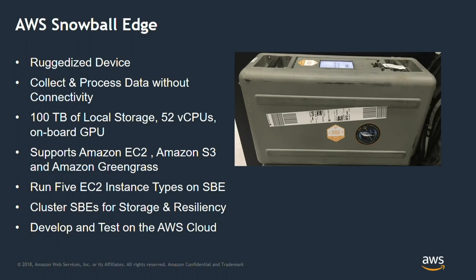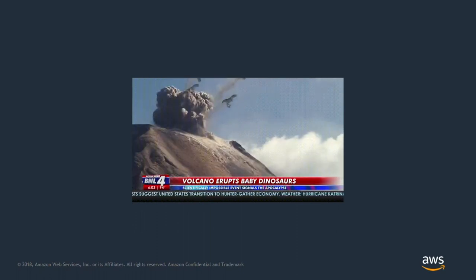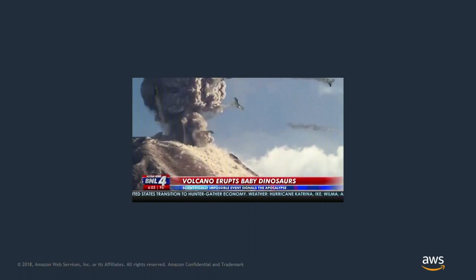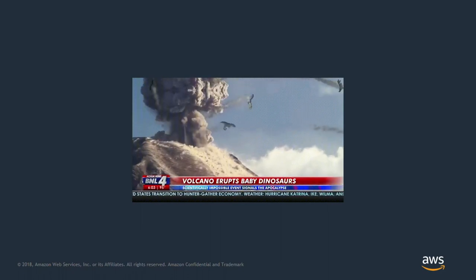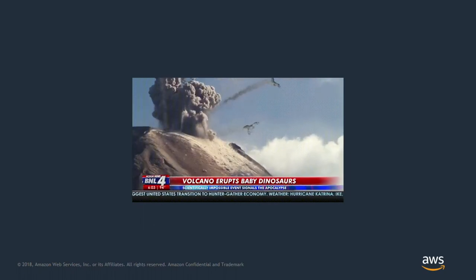The main tool we have to offer there is the Snowball Edge — a physically hardened device you can pick up and take with you. It gives you access to a subset of the same cloud services, and you can physically take it along — there's an airline shipping label on it, you can check it on a plane. A cool example: when there were volcanoes in Hawaii, USGS was worried their data center would get overtaken by lava flow. We shipped a Snowball to them, they put all their data on it, flipped the Kindle shipping label, sent it back, and all the data was moved out of the lava flow path and into the cloud.